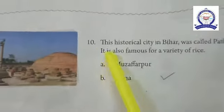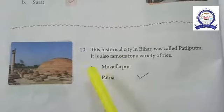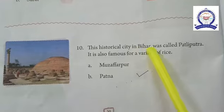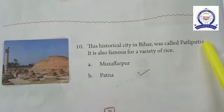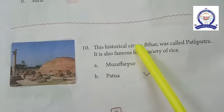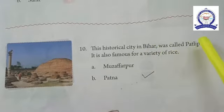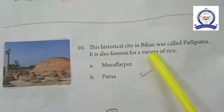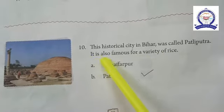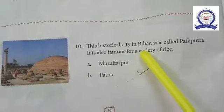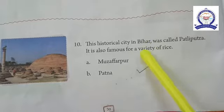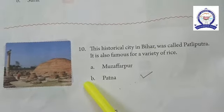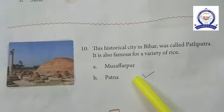Number ten: this historic city in Bihar was called Patliputra and is also famous for a variety of rice. The answer is option B — Patna.